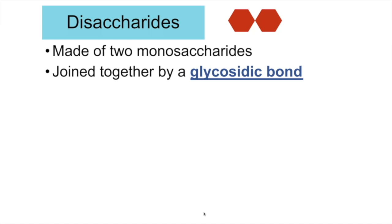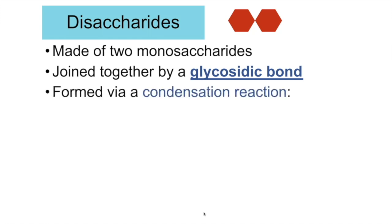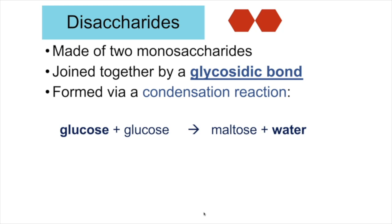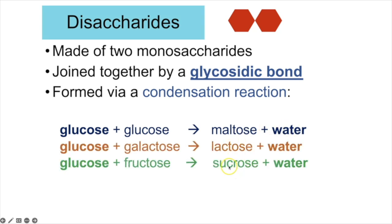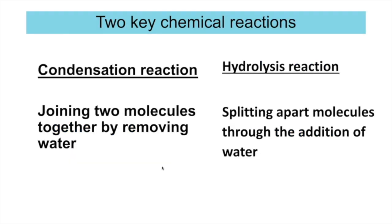Disaccharides are made up of two monosaccharides joined by a glycosidic bond formed during a condensation reaction — where a water molecule is removed and a bond is formed. Glucose + glucose forms maltose; glucose + galactose forms lactose; glucose + fructose forms sucrose. A condensation reaction joins two molecules together by removing water and forming a chemical bond. The reverse — hydrolysis — splits molecules apart through the addition of water, breaking a chemical bond.